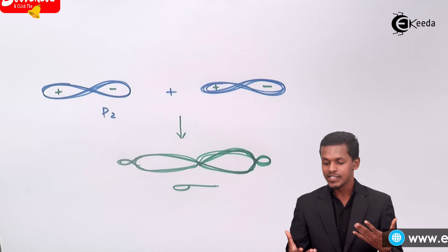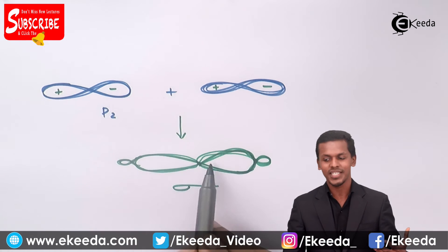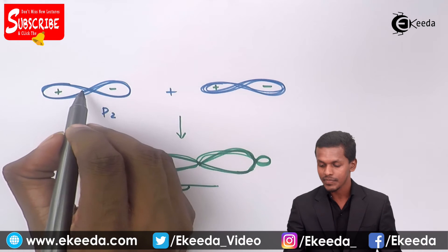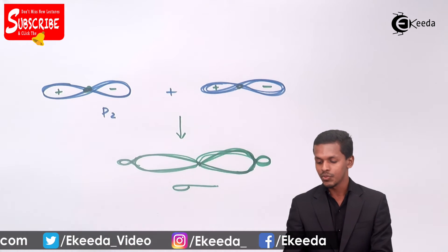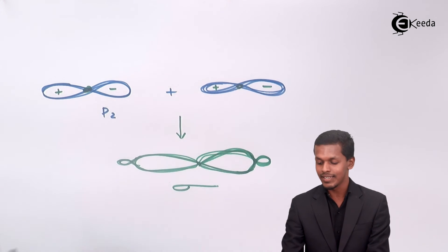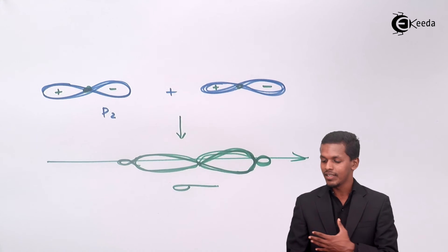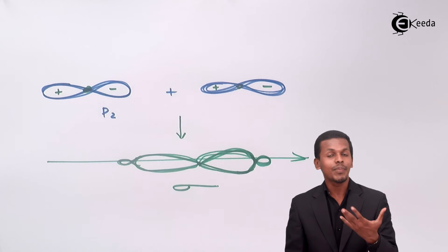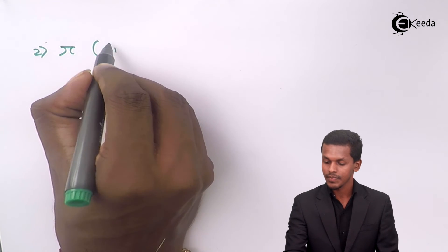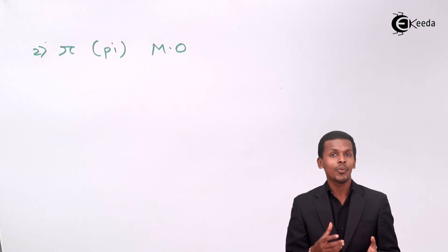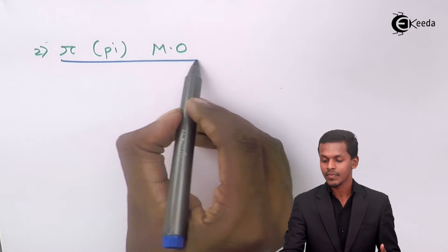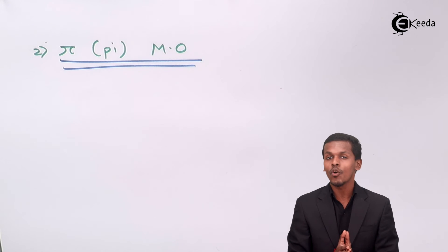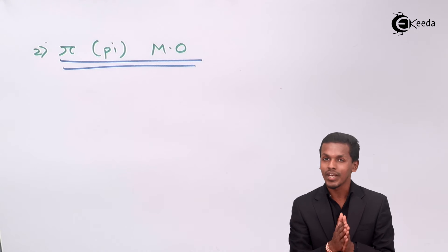Similarly, sigma star would form in the opposite case. The bigger lobes represent the electron density — where electron density is more, the internuclear axis lies along the nodal plane. Talking about pi molecular orbitals — pi molecular orbitals are observed in orbitals like px and py. Whenever they overlap, pi orbitals are not formed because of coaxial overlapping, but because of lateral overlapping.